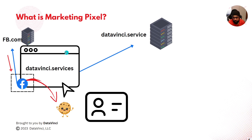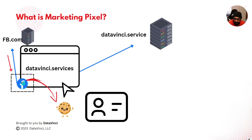Let's understand the concept of how the marketing pixel works. Let's say you have a website — in our case it's datavinci.services. All the components on datavinci.services are mostly hosted on the servers of datavinci.services. Whatever requests are being made to that server would not be blocked by an ad blocker or cookie blocker, because you are on this website and you need the components from that server. Then you have a pixel — in this case a Facebook Pixel — and the data for the pixel is linked to the server of the marketing platform.